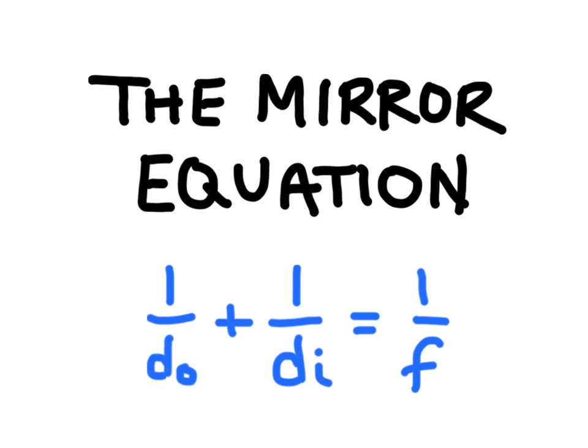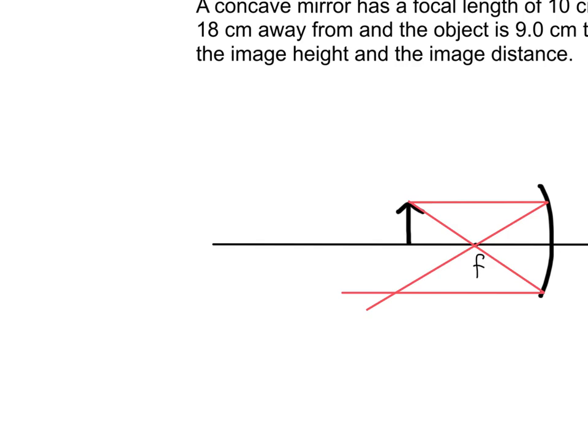In this video we're going to learn about the mirror equation. The mirror equation is an equation that's used to calculate the distance of an image that is produced when light reflects off an object into a mirror.